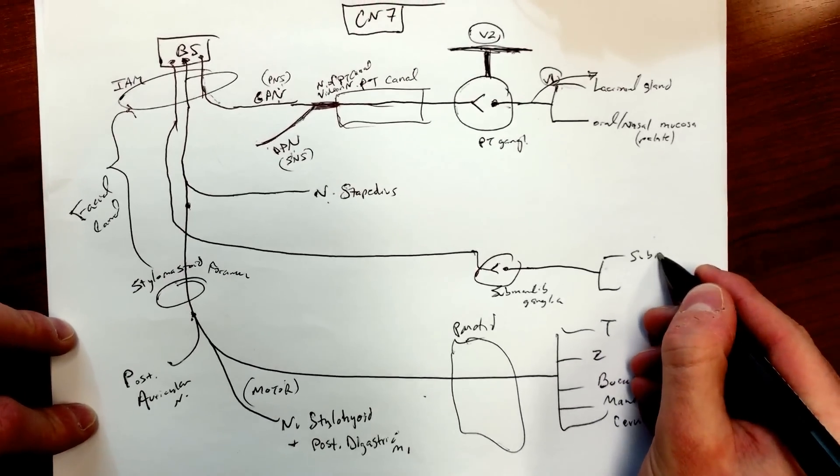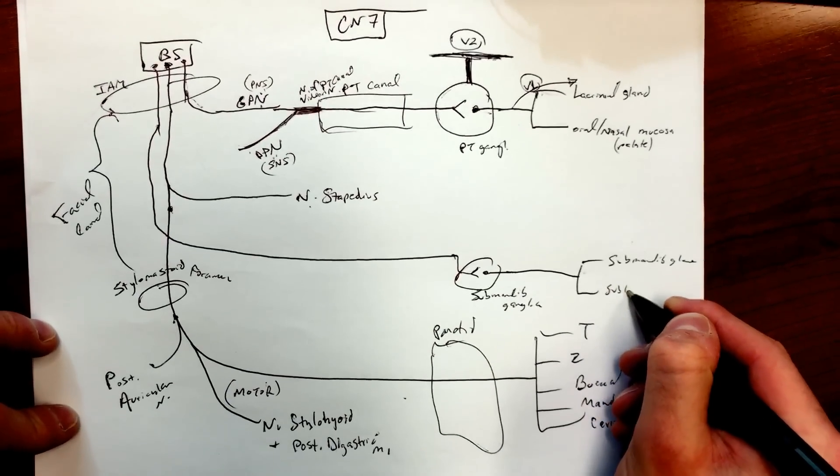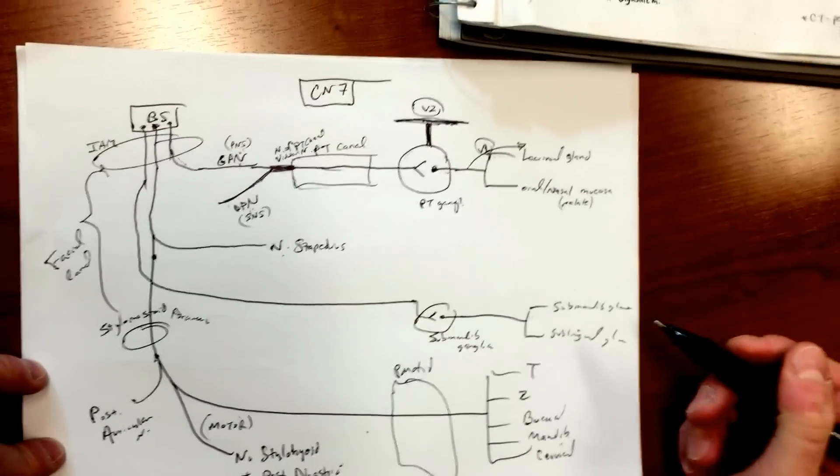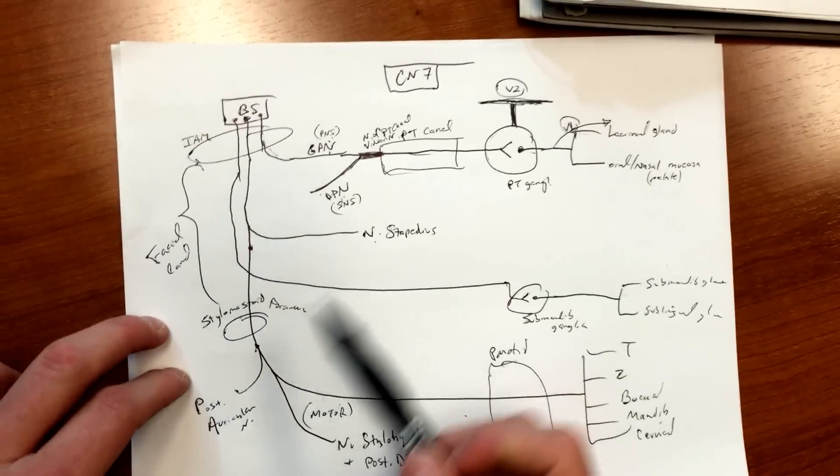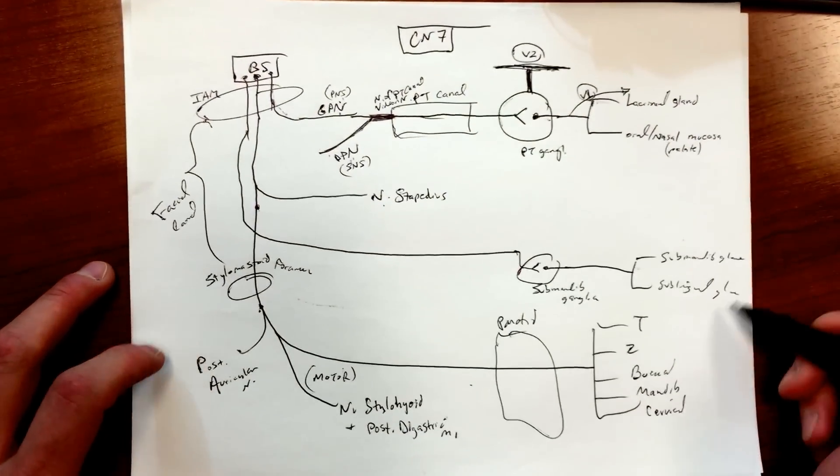And then it's gonna go on and do its job over at submandibular gland and sublingual gland. So we said that earlier, you can tie that there. So if cranial nerve 7 is sending out these fibers and it's trying to get to your mouth, your tongue kind of area.